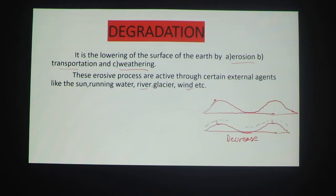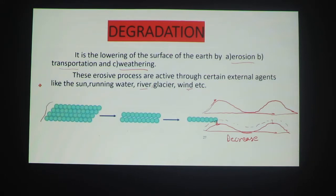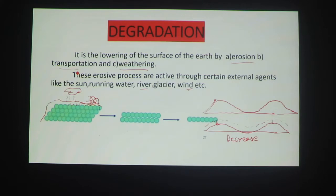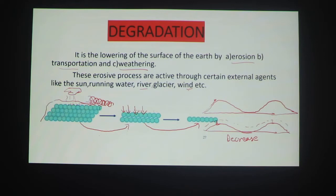This height reduction is done by agents such as running water, river, and glacier. For example, this is the surface height. Suppose there is rainfall — there is erosion. There are particles carried by erosion, running water, and wind. This height reduces. Then erosion, transportation, and weathering all act together.